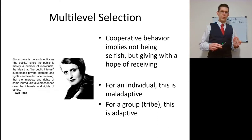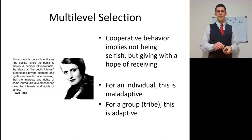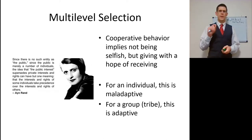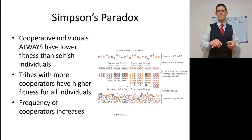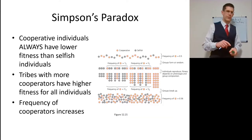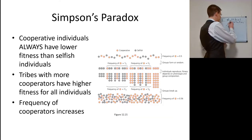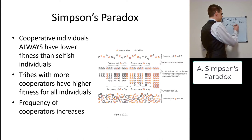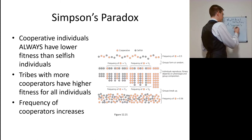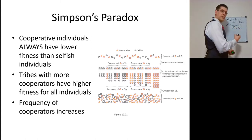For an individual, it's maladaptive to be cooperative — being selfish gets you all the gains. For a group, though, it can be adaptive to have cooperative members within it — and by people I mean bacteria, of course. This is known as Simpson's paradox: for each individual it is better to be selfish, but for the group it is better to be cooperative.